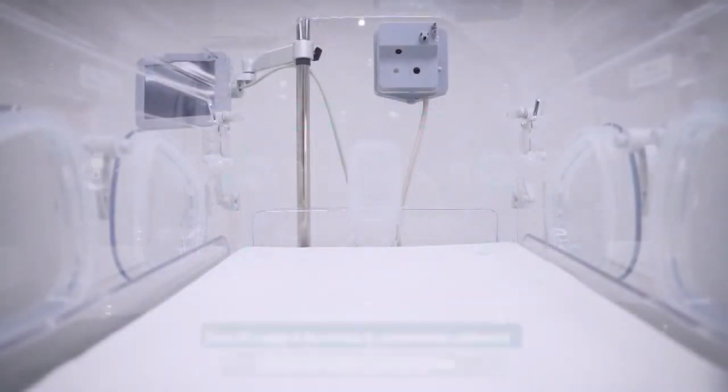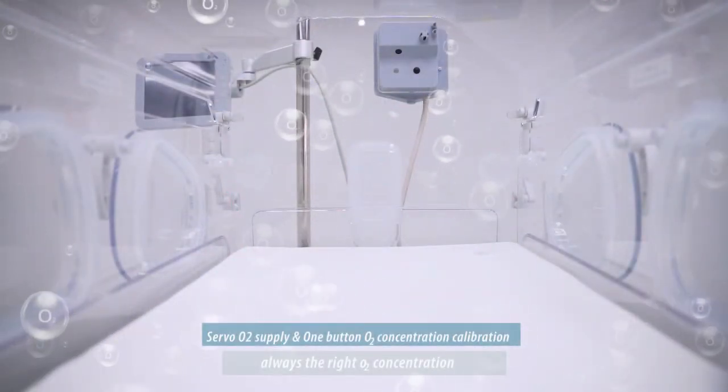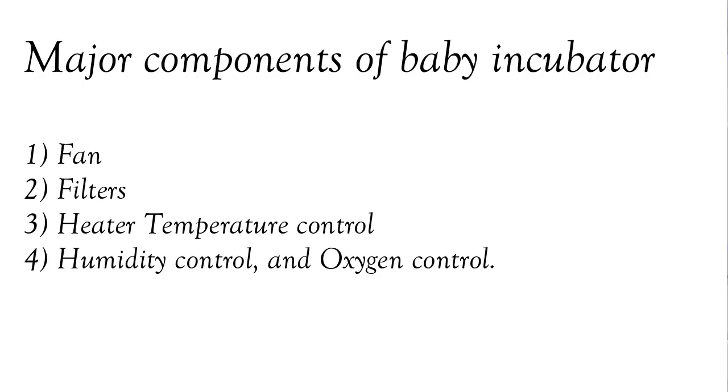The moistened, heated, and enriched air now flows into the cabinet with the baby. One part of the air escapes from the cabinet through vent holes, another part gets back into the air processing. The major components of a baby incubator are the fan, filters, heater, temperature control, humidity control, and oxygen control.